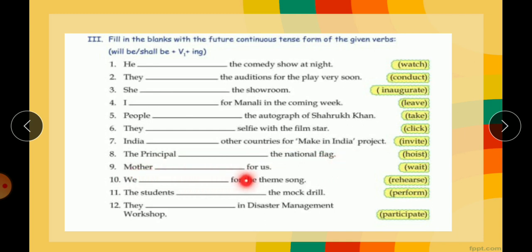The principal will be hoisting the national flag. Mother will be waiting for us. We shall be rehearsing for the theme song. Students will be performing the mock drill. They will be participating in disaster management workshop. You can use will uniformly in all places, and for using shall you have to only use it before I and we, then ing form with the first form of the verb.